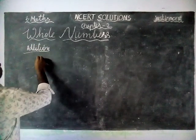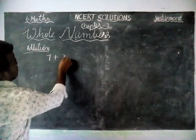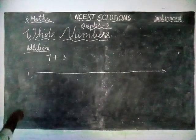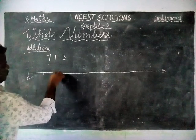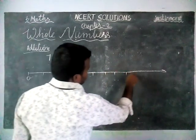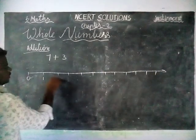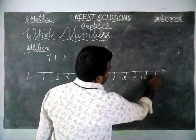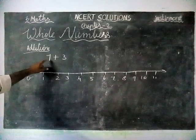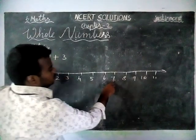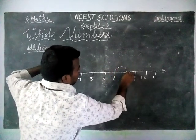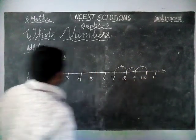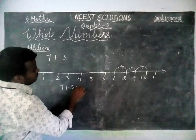We are going to add 7 plus 3 on the number line, which starts from 0, 1, 2, 3, 4, 5, 6, 7, 8, 9, 10, 11. Number 7 is marked on the line. From there, we take 3 jumps — 1, 2, 3. On the third jump, we reach number 10. So 7 plus 3 is equal to 10.